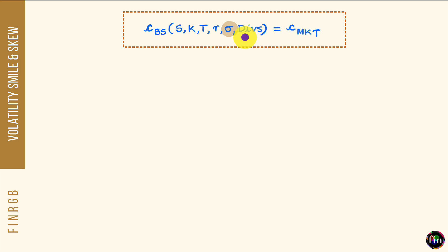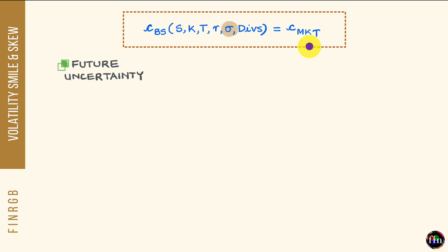This brings us to the definition of implied volatility: implied volatility is that volatility input which makes the model price of a given option equal to its market price. The first aspect is that, in contrast to realized or historical volatility, implied volatility is a measure of future uncertainty of your underlying asset.